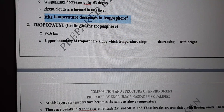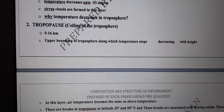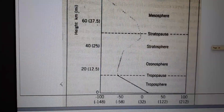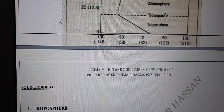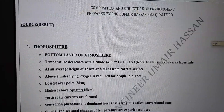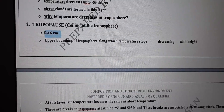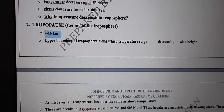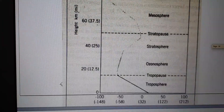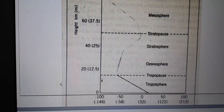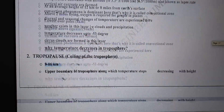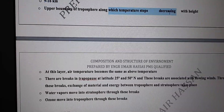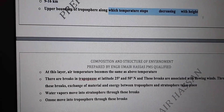The tropopause is the ceiling of the troposphere. It exists from 9 to 16 kilometers from the surface of earth. This is the upper boundary of the troposphere, and at this point temperature stops decreasing with height.